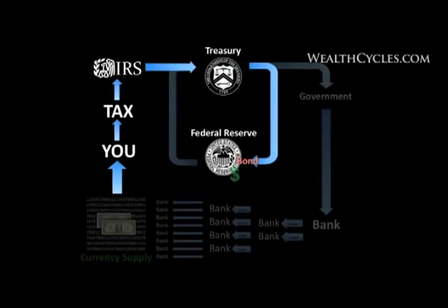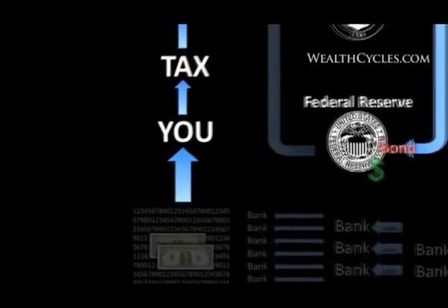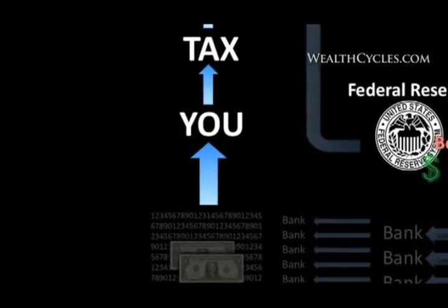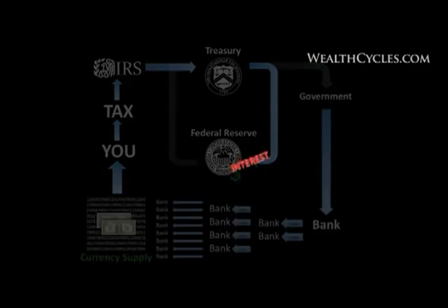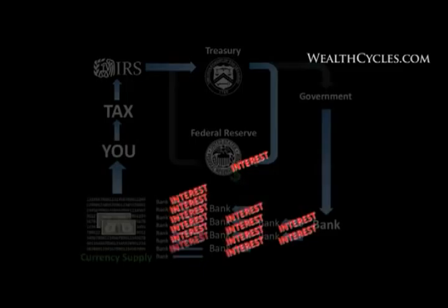The value of the currency comes from all the labor and ideas and talent of the people — this is what actually gives it value. And because there is interest due on that bond, and interest due on every single one of these loans, there is always more debt than there is currency to pay the debt. In the United States, we have about 14 trillion dollars, but we have 60 trillion dollars of debt to pay with that 14. It's impossible.